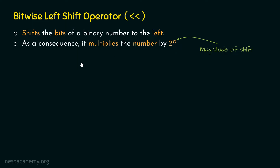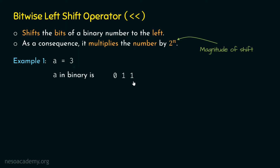Let's understand with the help of an example how the bitwise left shift operator works. We will consider a simple example where a is equal to 3. We want to shift the bits of this number, so we first need to represent it in binary form. The binary equivalent of 3 is 011. We will perform the operation a left shift 1. Since the magnitude of shift is 1, we must shift the bits only once.